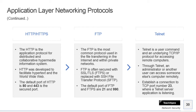Next we have FTP — File Transfer Protocol. This is a standard internet protocol for transmitting files between computers over TCP/IP connections. It's a client-server protocol that relies on two communication channels between client and server: a command channel for controlling the conversation and a data channel for transmitting the file content. FTP is often secured with SSL or TLS, which is called FTPS.